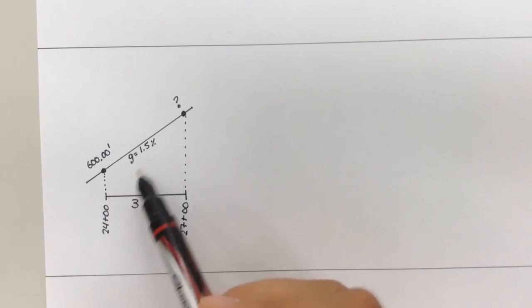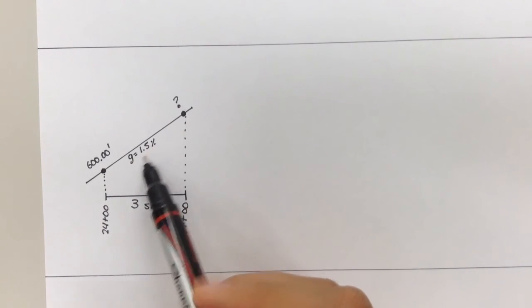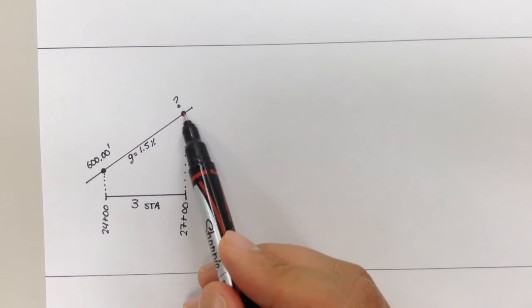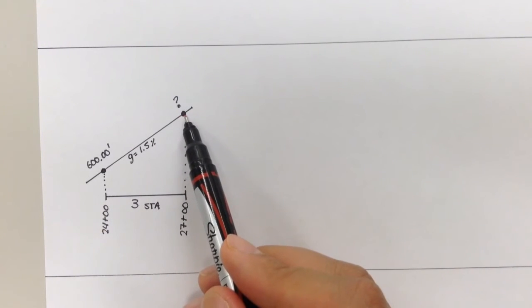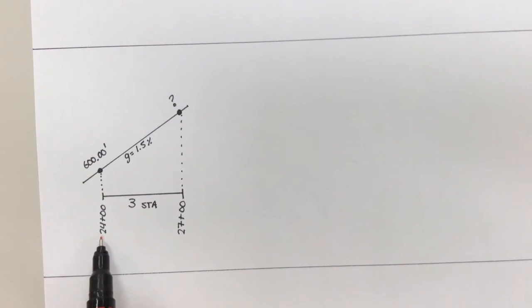Here we have a line. It's at, the grade is 1.5 percent. First elevation is 600, and we want to figure out what this elevation is at this point with the question mark. Our station is 2400, or 24 plus 00, 27 plus 00, and so the distance is three stations.